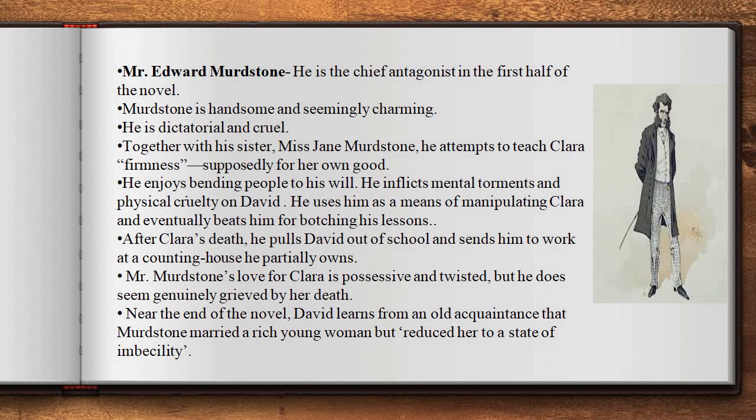Mr. Murdstone's love for Clara is possessive and coercive, but he does seem genuinely grieved by her death. Near the end of the novel, David learns from an old acquaintance that Murdstone married a rich young woman but reduced her to a state of imbecility.